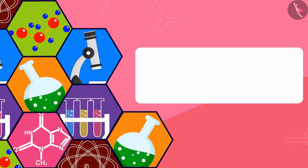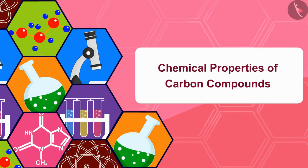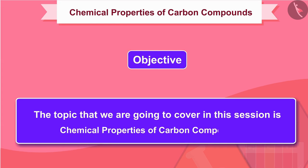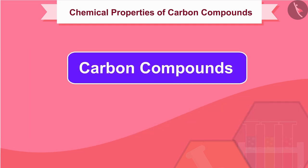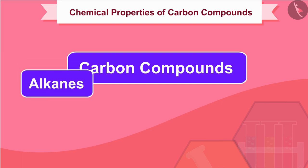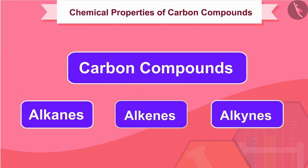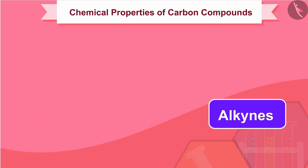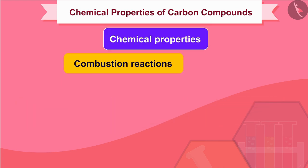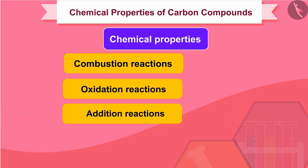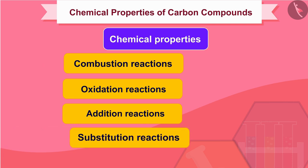Hello friends, welcome to this video session. The topic we are going to cover is chemical properties of carbon compounds. The most common carbon compounds are hydrocarbons — alkanes, alkenes, and alkynes. The chemical properties we are going to study here are combustion reactions, oxidation reactions, addition reactions, and substitution reactions.